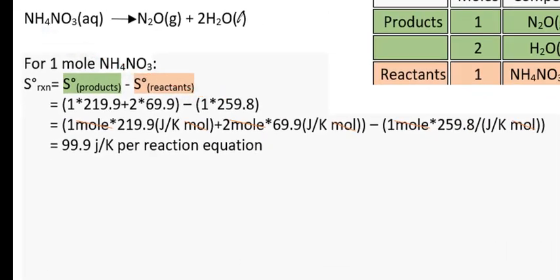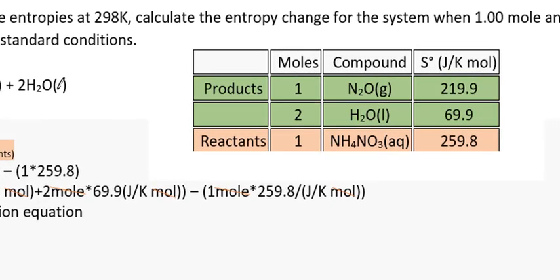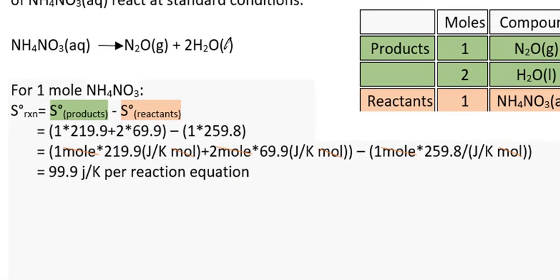The next line, I deliberately included the units to show you how the mole unit cancels out. Because remember, you're given these S values, these entropy values, in the units of joule per kelvin mole. That mole unit needs to cancel out. So it cancels out when you multiply the number of moles from the equation. So first we look at ammonium nitrate. 1 mole of ammonium nitrate times the 219.9. Notice the moles cancel.